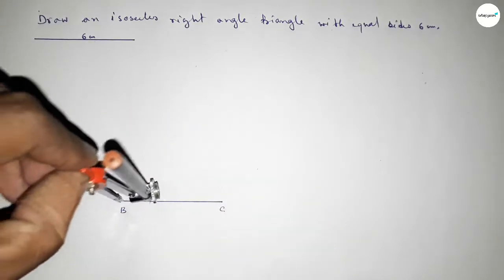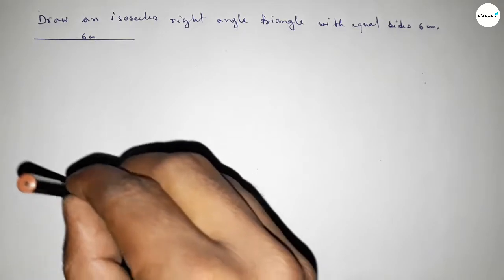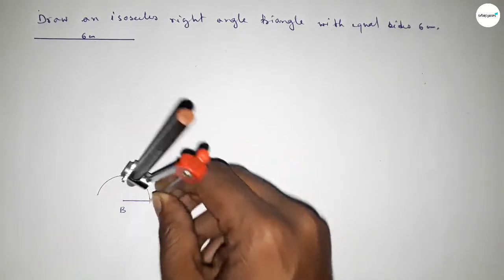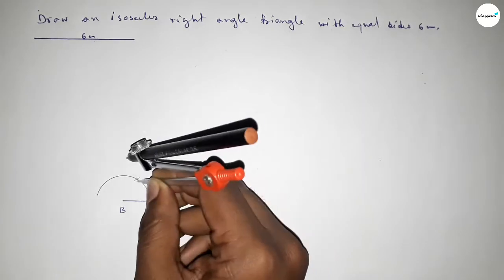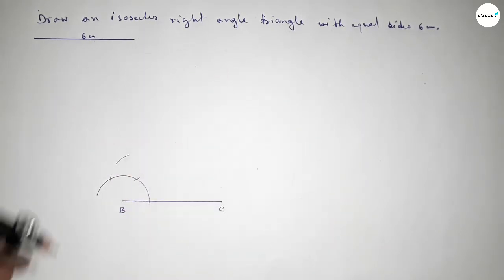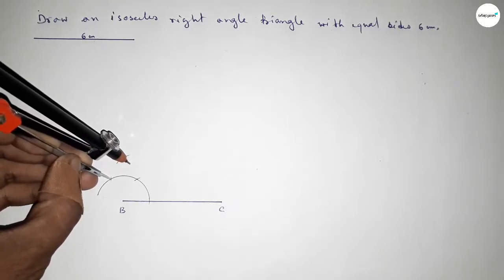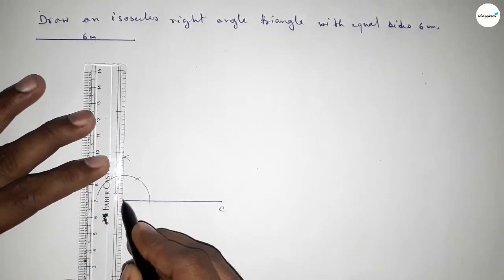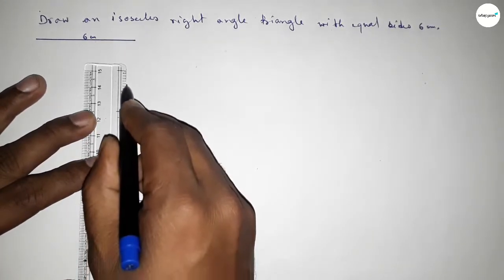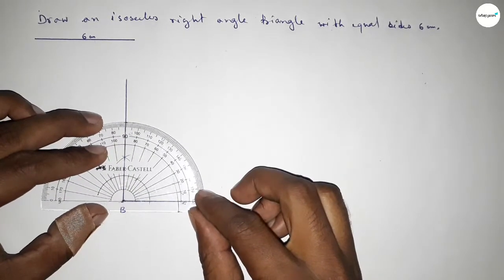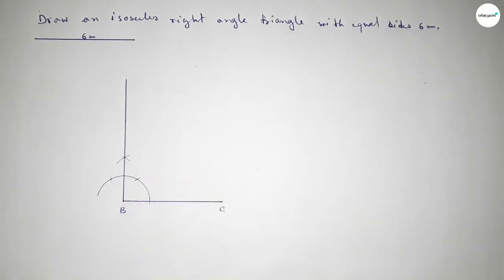With the same length, putting the compass here and cutting here. Again with the same length, putting the compass here and cutting here, and drawing an arc. Both curves intersect at a point. Now joining this side to get a 90-degree angle. Checking whether it is 90 degrees or not — this is perfectly 90 degrees.